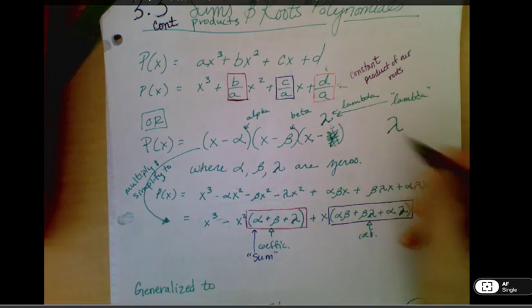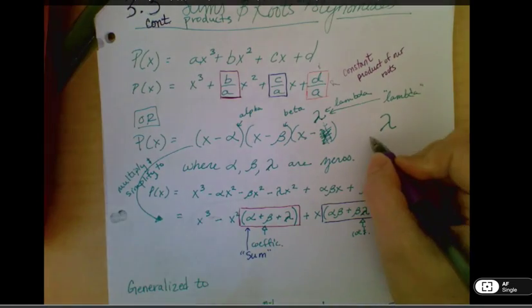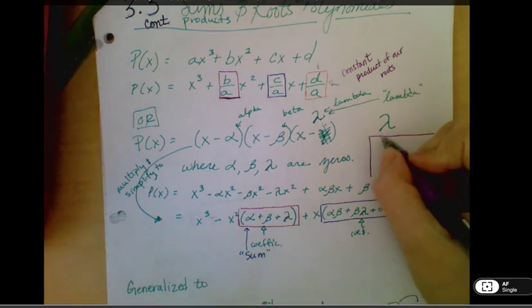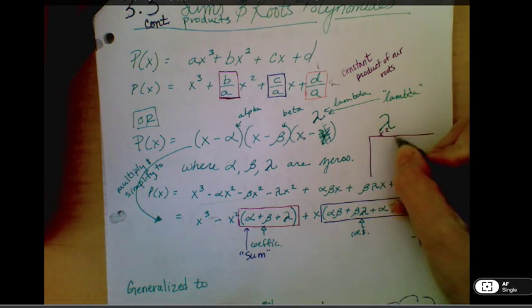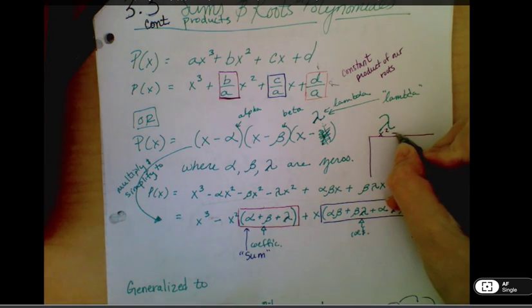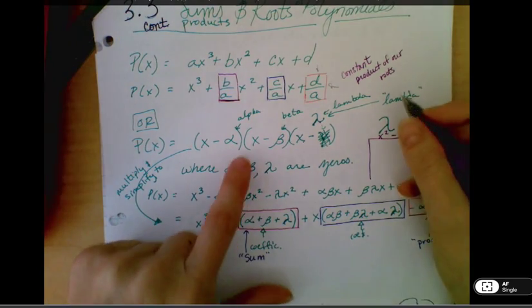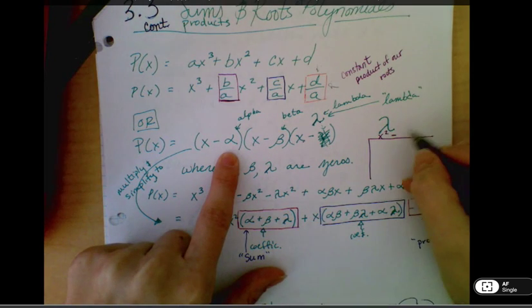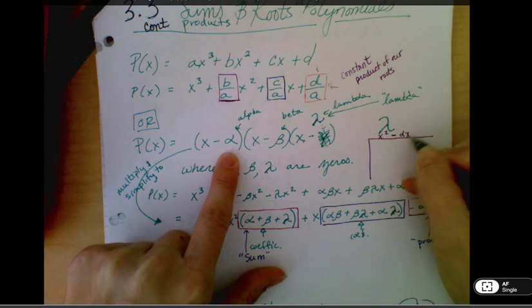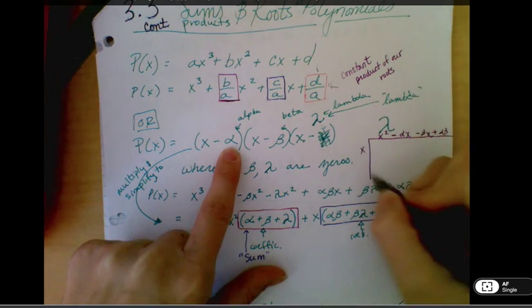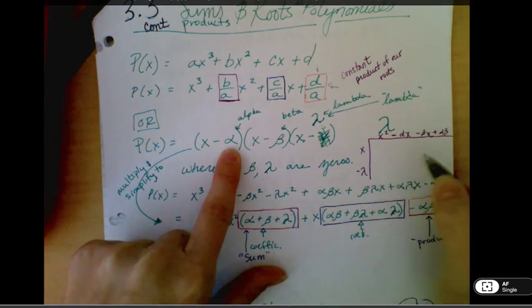And if you want to go ahead and write these out, maybe you multiply these two together and you get X squared minus this term and that term plus alpha beta. And then you can multiply it this way by X minus lambda.